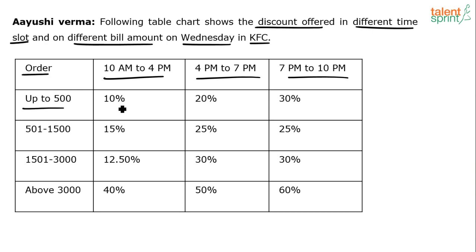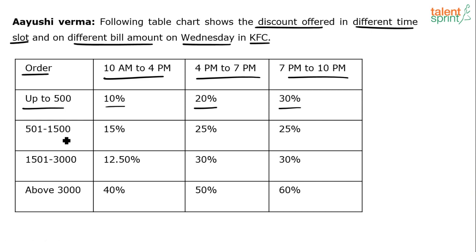If your order amount is up to 500 rupees, you get 10% discount between 10 AM to 4 PM, 20% discount between 4 PM to 7 PM, and 30% discount from 7 PM to 10 PM. The next ranges are 501 to 1500 rupees, 1501 to 3000 rupees, and above 3000 rupees.